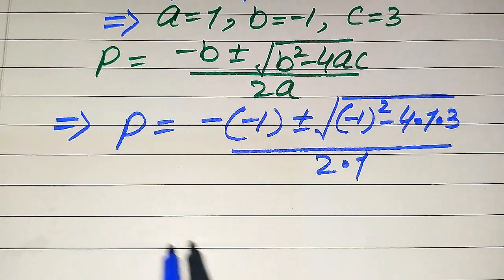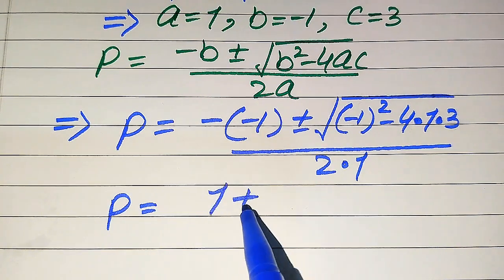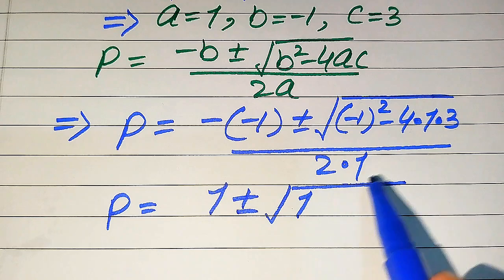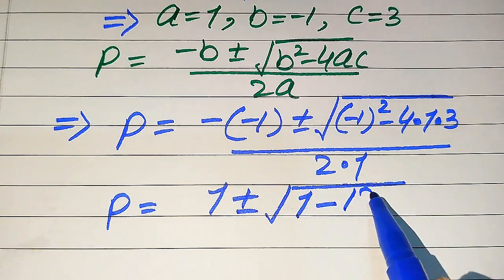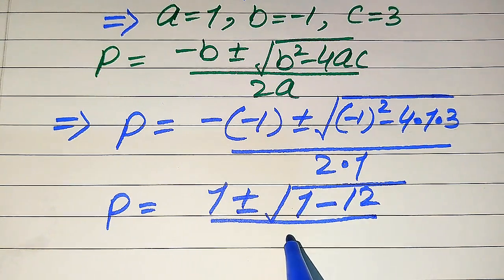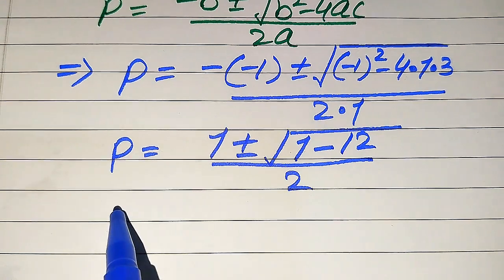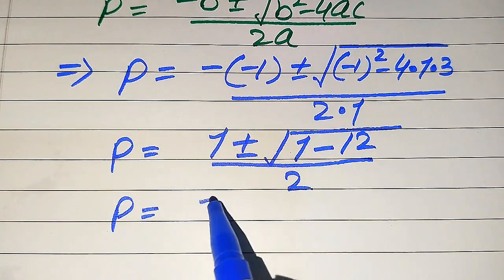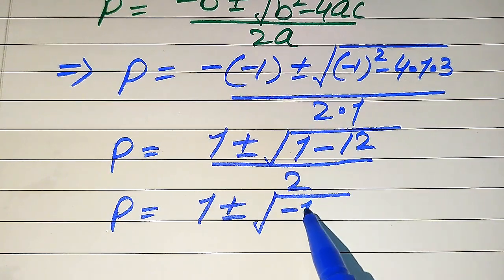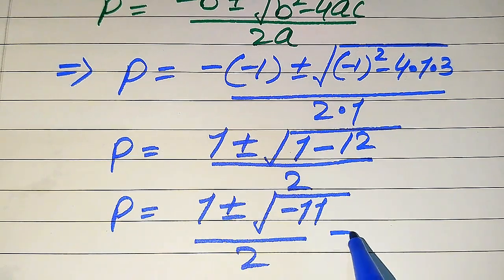Simplifying: −(−1) becomes +1, (−1)² = 1, and 4 × 3 = 12, divided by 2 × 1 = 2. So we have (1 ± √(1 − 12)) / 2, which gives (1 ± √(−11)) / 2.